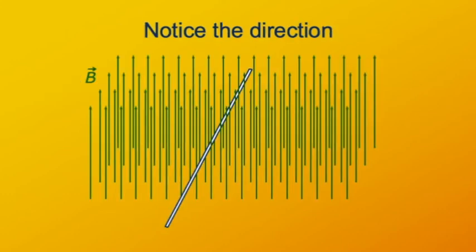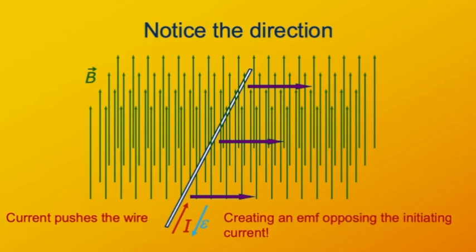Let's turn our attention back to the current-carrying wire inside the magnetic field. Recall that a current through the wire, into the screen and away from you, causes the field to push the wire to the right. But the wire moving to the right causes the field to deflect positive charges toward you and negative charges away from you, which is a current out of the screen toward you. Notice this is opposite the direction of the current that drove the motion. This back EMF reduces the current in the wire.